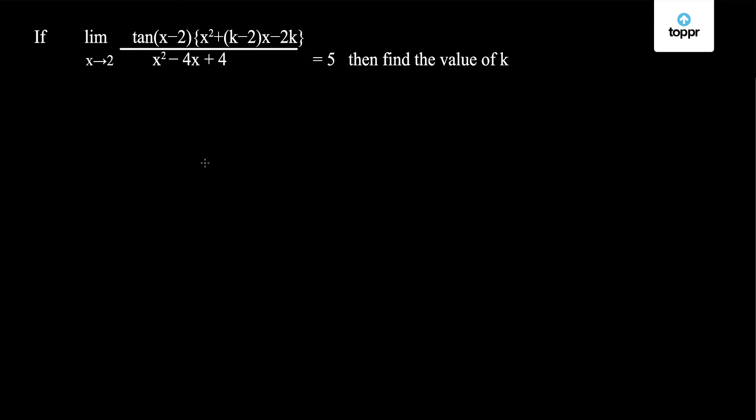Let us take one problem based on limits. This problem appeared in JEE Mains exam in 2014. The problem is: if limit x tends to 2, tan(x - 2) times (x² + kx - 2x - 2k) upon x² - 4x + 4 equals 5, then find the value of k.